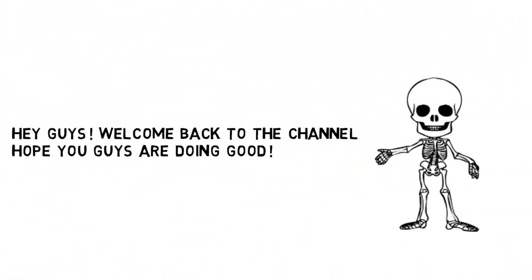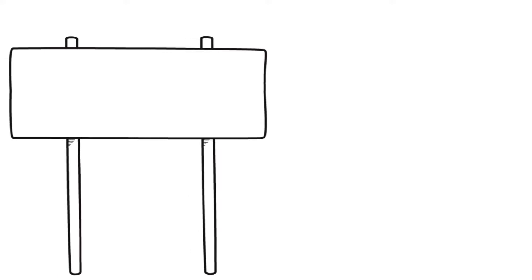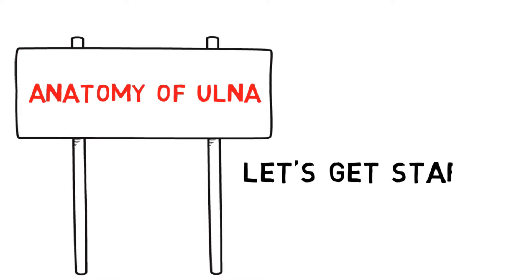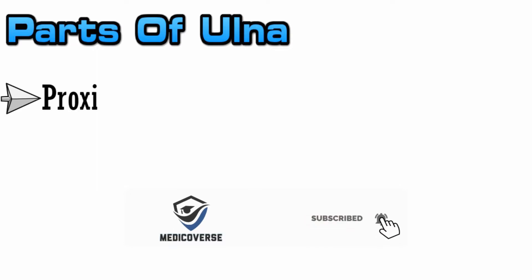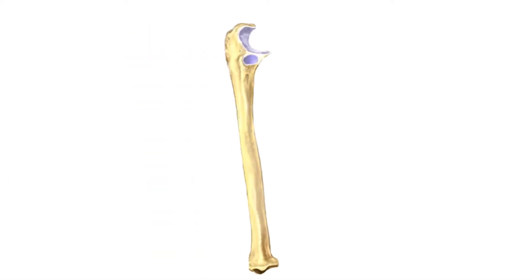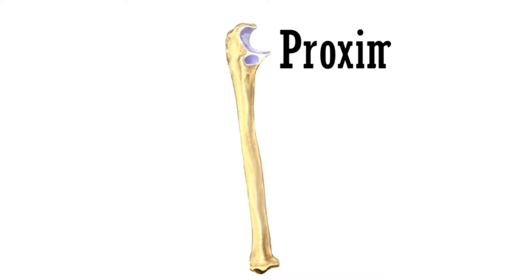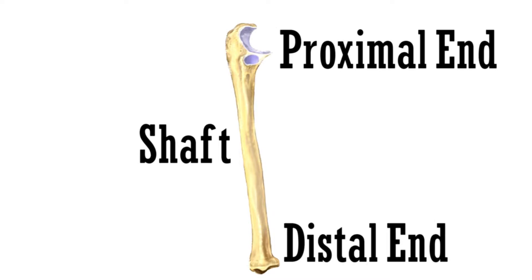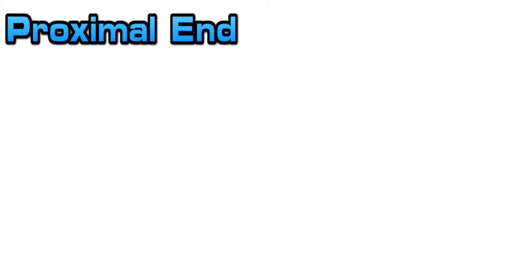Welcome back to the channel. Today we will discuss the anatomy of ulna. Without wasting any more time, let's get started. The ulna has three parts: the proximal end, the shaft, and the distal end. Let's discuss what anatomical structures are present in each of these parts.